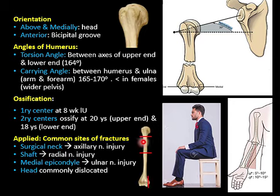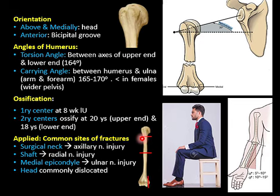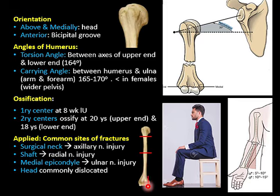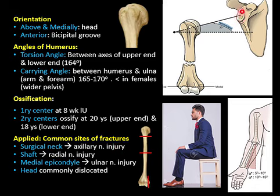The most common sites of fracture of the humerus are three. At the surgical neck, the axillary nerve is related directly to the bone and may be injured. In the spiral groove, the radial nerve runs and may be injured along with the brachial artery. Fracture of the medial epicondyle is also common, and the ulnar nerve behind it may be injured. Additionally, the head of the humerus is commonly dislocated from the glenoid cavity, causing shoulder dislocation.